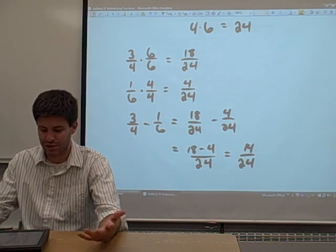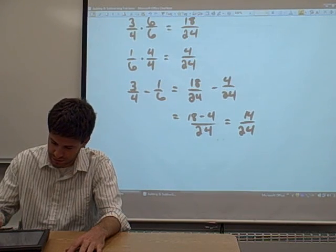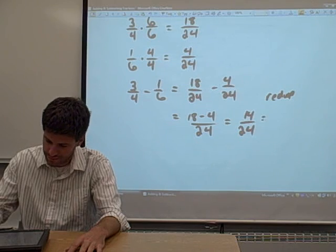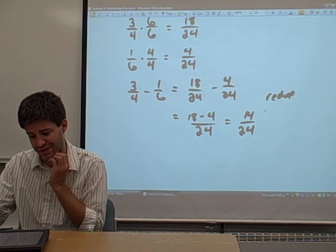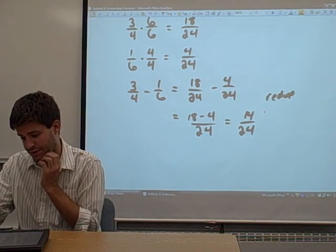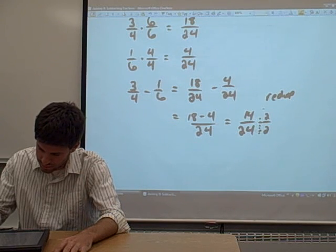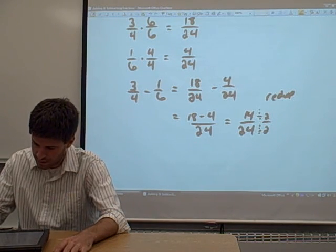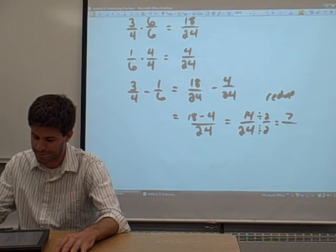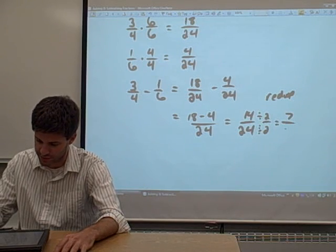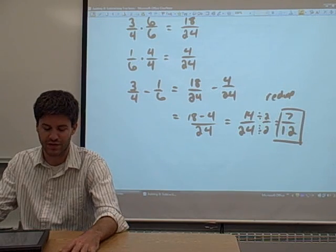That would be our answer, except it looks like it can be reduced. So let's reduce that fraction. Looks like we can divide both the numerator and the denominator by 2. What we get when we divide the numerator and the denominator by 2 is 7, and the numerator 24 divided by 2 is 12. Now that fraction is in lowest terms, so that's our answer.